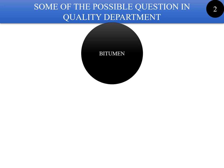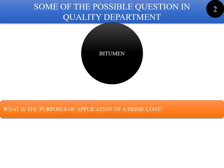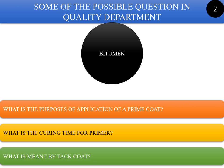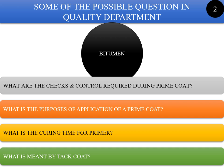In Set 2, some of the possible questions covered are: What is the purpose of application of a prime coat? What is the curing time of a primer? What is meant by a tack coat? And what are the checks and controls required during a prime coat application?